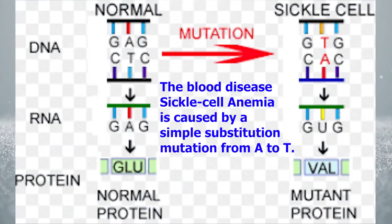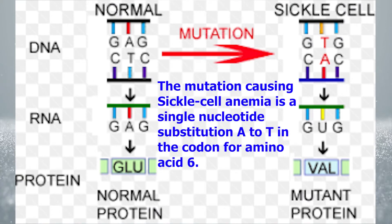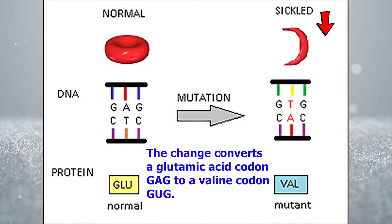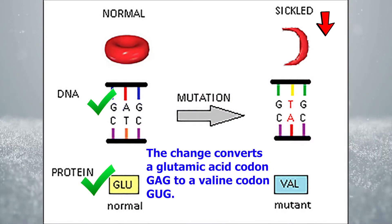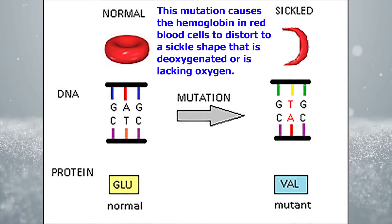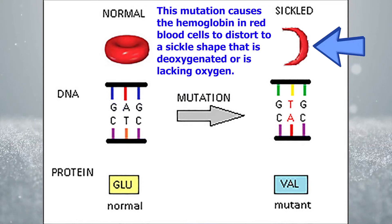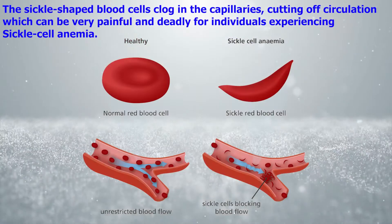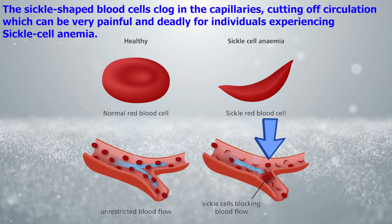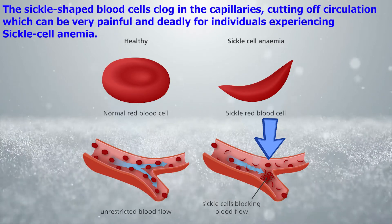One of the most common examples is sickle cell anemia. The blood disease sickle cell anemia is caused by a simple substitution mutation. The mutation causing sickle cell anemia is a single nucleotide substitution from A to T in the codon for amino acid 6. The change converts a glutamic acid codon, GAG, to a valine codon, GTG. This mutation causes the hemoglobin in red blood cells to distort to a sickle shape that is deoxygenated or lacking oxygen. The sickle-shaped blood cells clog in the capillaries, cutting off circulation, which could be very painful and deadly for individuals experiencing sickle cell anemia.